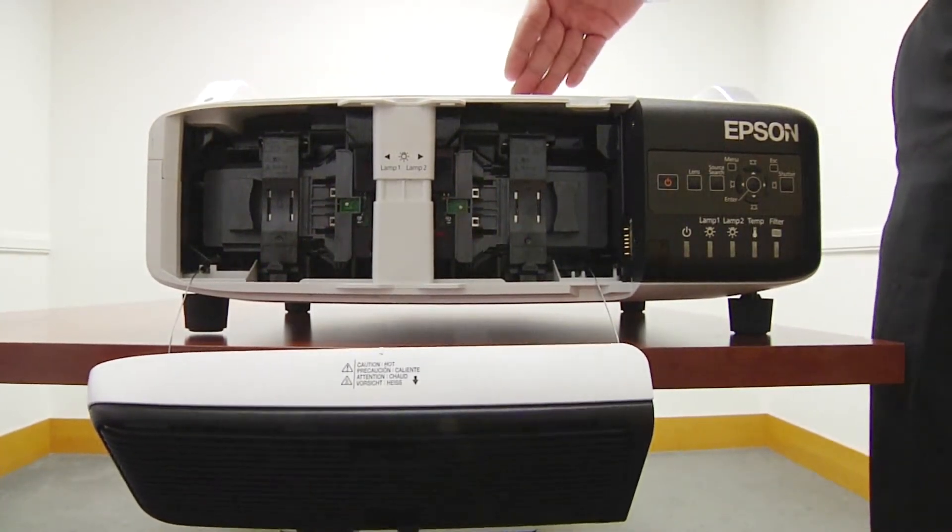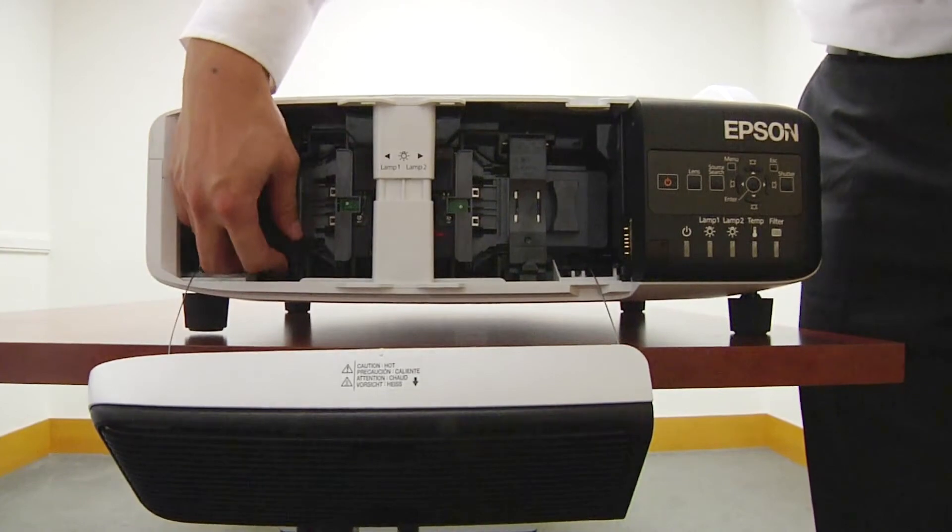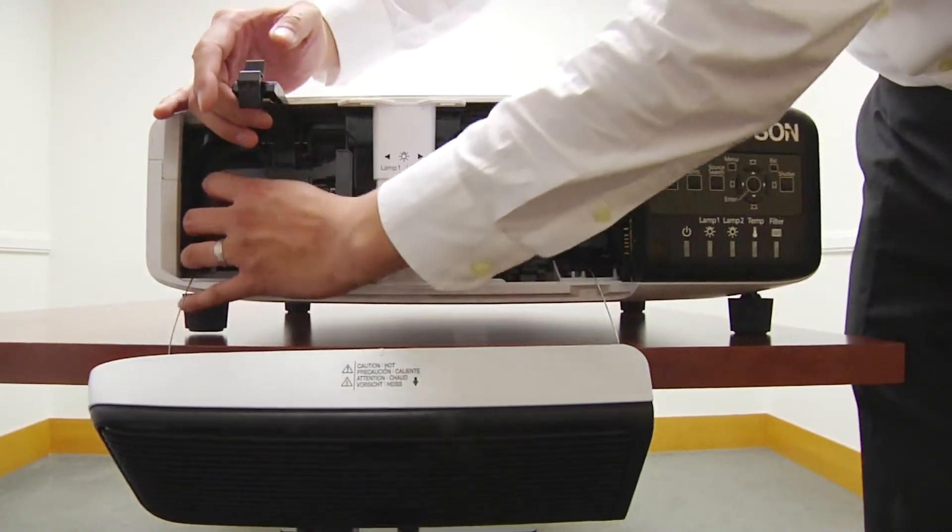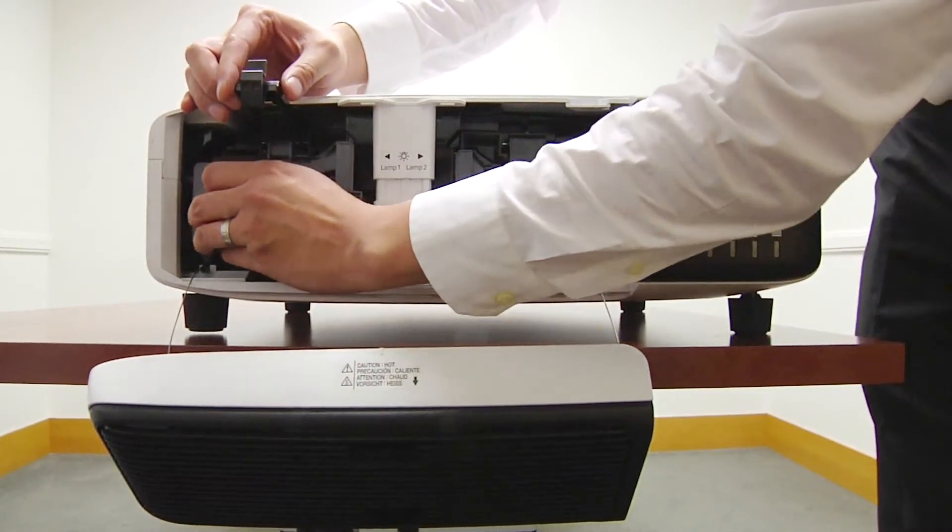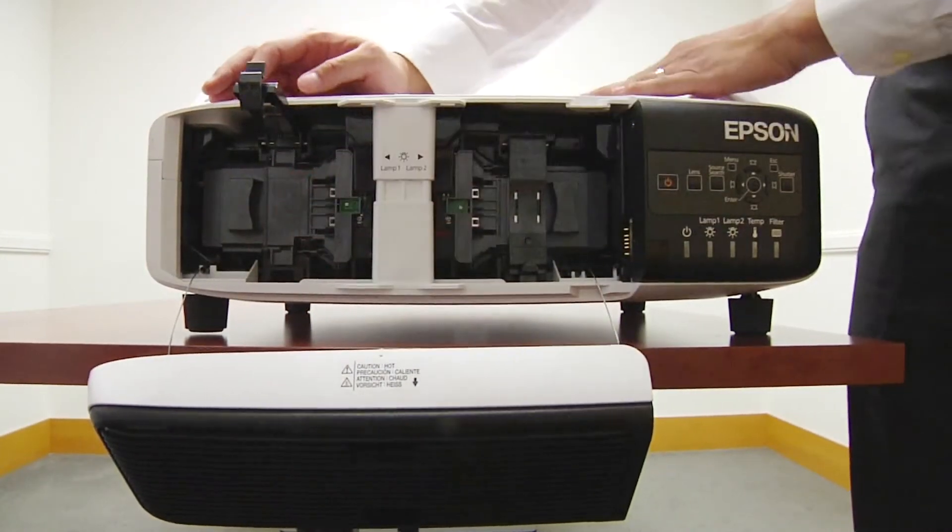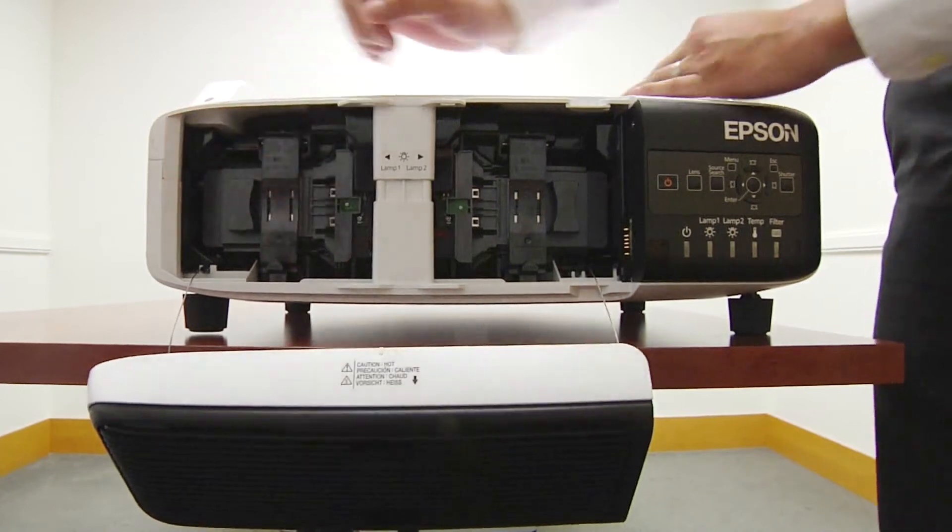Now you'll see two lamps, Lamp 1 and Lamp 2. To access Lamp 1, pull up on the clamp, slide the lamp directly out, replace with new lamp facing the right or the center of the projector, and press the clamp shut.